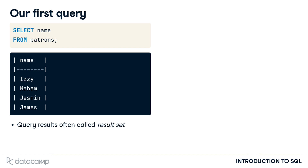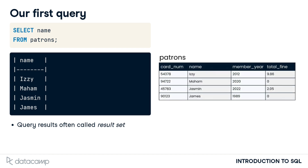Note that we have not changed our database by writing this query. The tables, including the patrons table, are exactly the same as before we wrote the query. In order to share our results, we can save the SQL code we have written so that our collaborators can use it to query the database themselves. We'll cover saving queries in a later lesson.